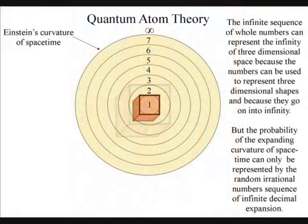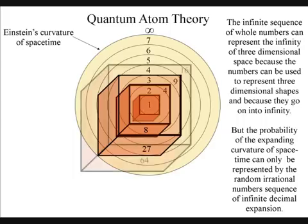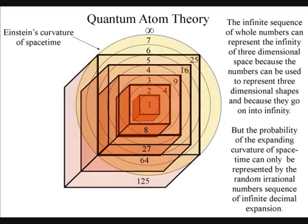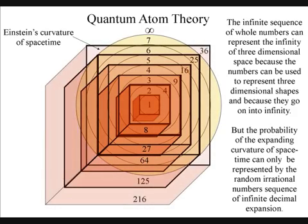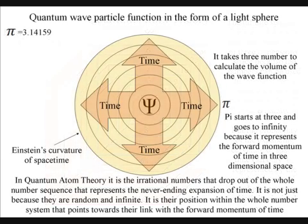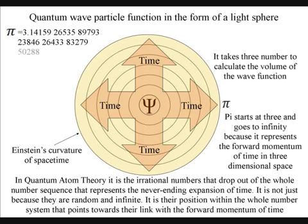It is easy to see how our infinite sequence of whole numbers can represent the infinity of three-dimensional space, because the numbers can be used to represent three-dimensional shapes. But it is the irrational numbers that drop out of the whole number sequence that represent the never-ending expansion of time.